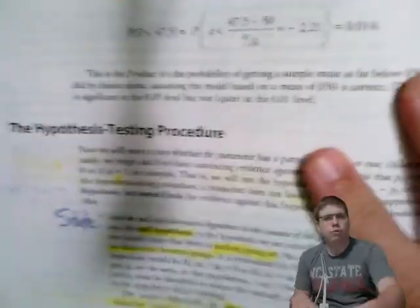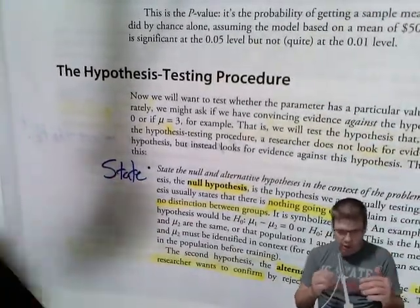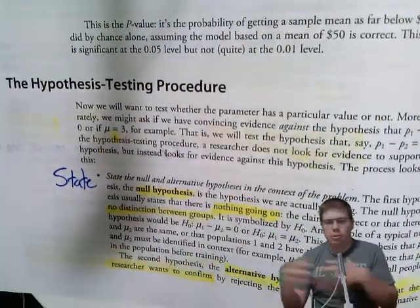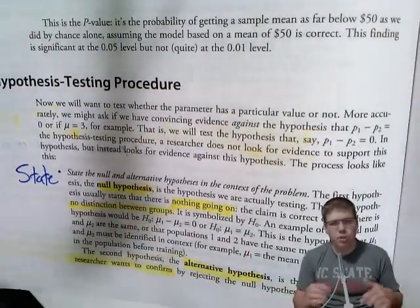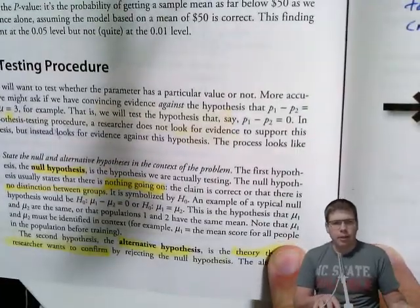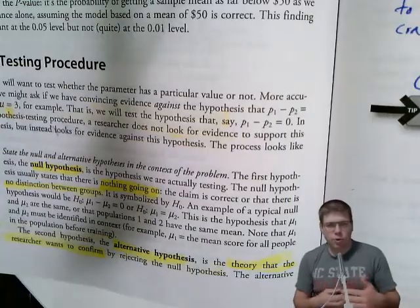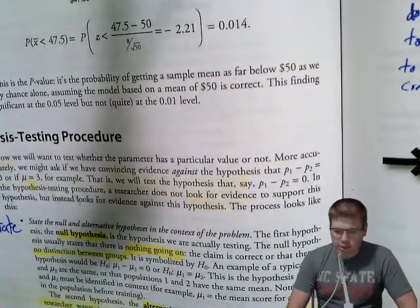You've got this full four-step process: state, plan, do, conclude. We state our null hypothesis, where kind of nothing is going on. Maybe it's some prior value we have, or if we're doing a difference, it's that there's no difference between those groups. Our alternative hypothesis, a lot of times, is that they are different, or there is some theory we're looking to find evidence for.